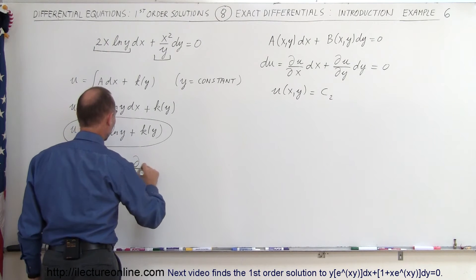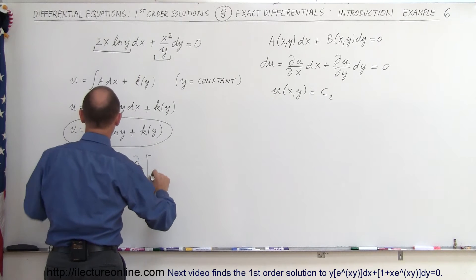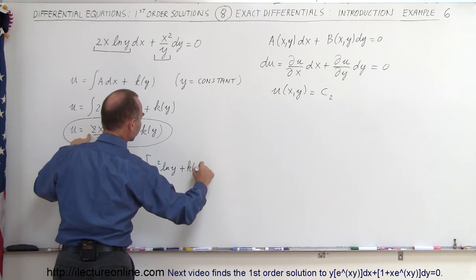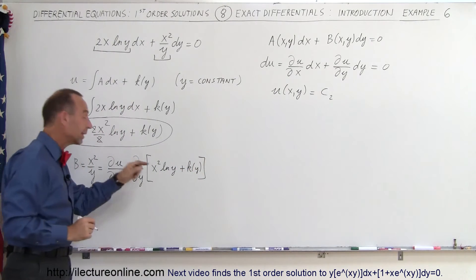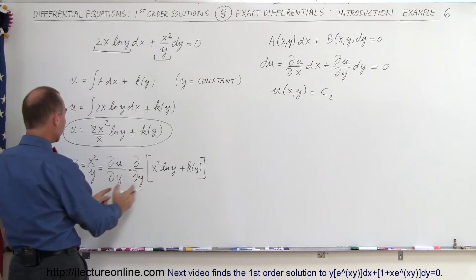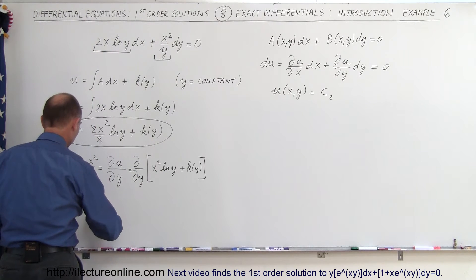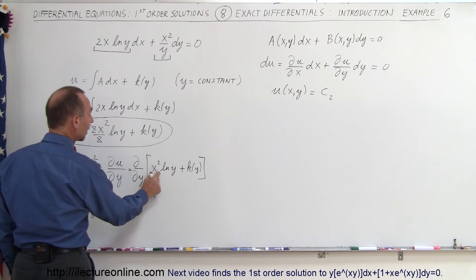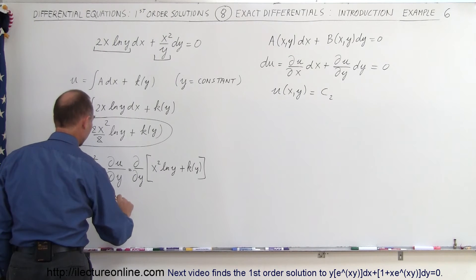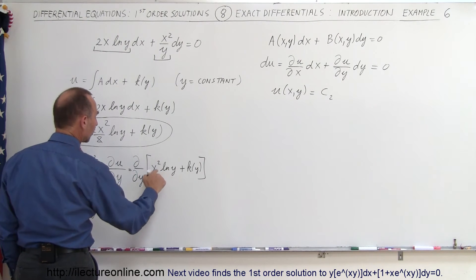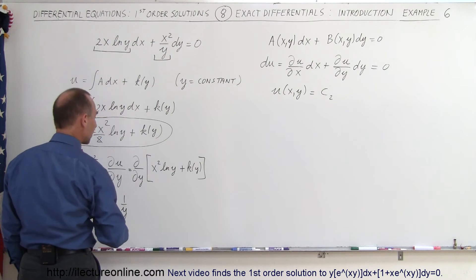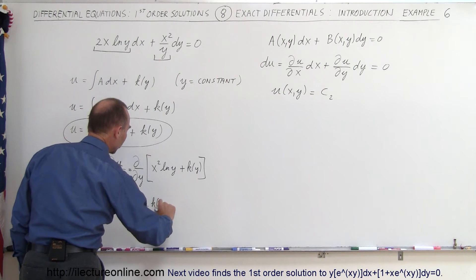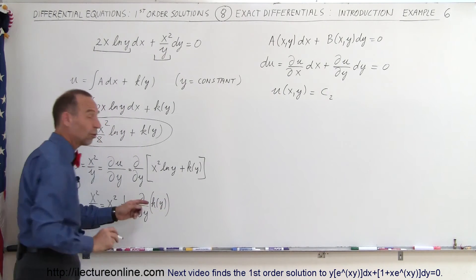So x squared over y equals the partial of u with respect to y, and u equals x squared times the natural log of y plus k of y. Taking the partial derivative, x squared is a constant, so we get x squared times 1 over y — since the partial of the natural log of y with respect to y is 1 over y — plus the partial of k of y with respect to y.